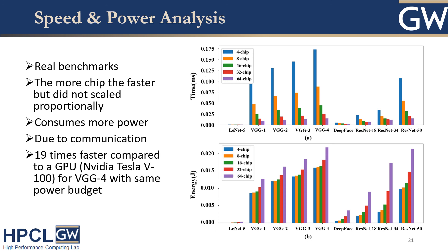Here is the speed and power analysis when running real benchmarks on our design. We tested different numbers of chips on the same application to see how performance changes. Of course, using more chips is faster, but power consumption will be higher, and the dominant power overhead comes from chip-to-chip communication. Compared to the NVIDIA Tesla V100 GPU on VGG specifically, with the same power budget, our design is 19 times faster.